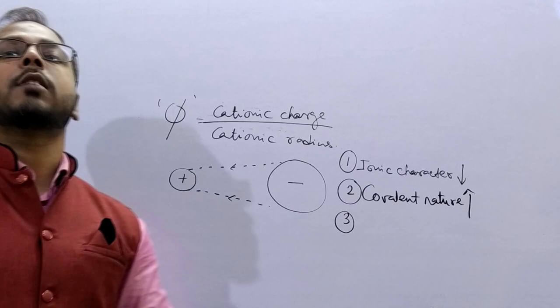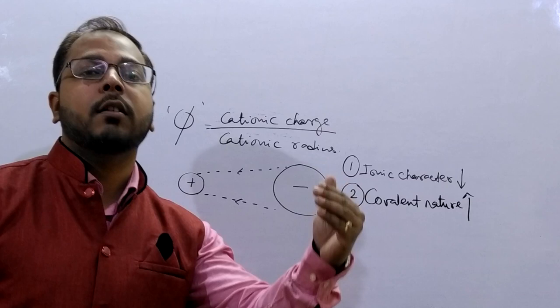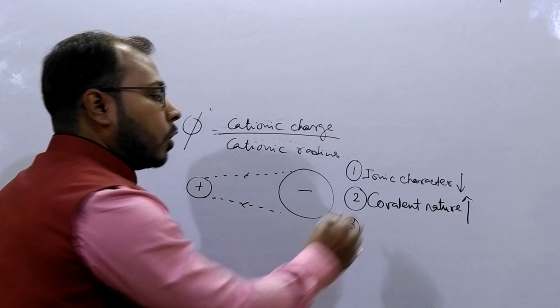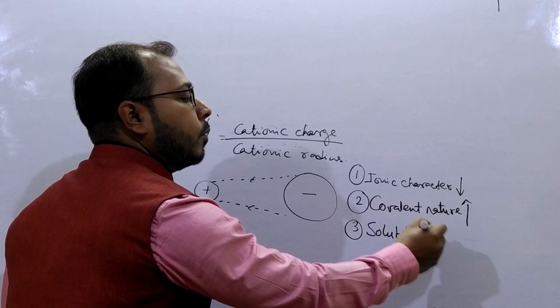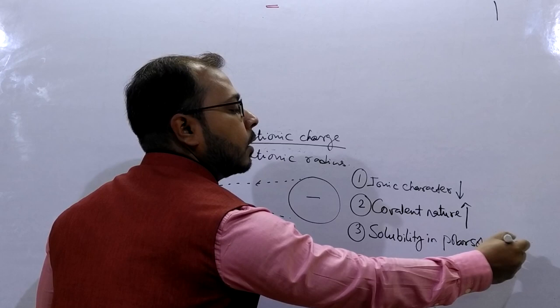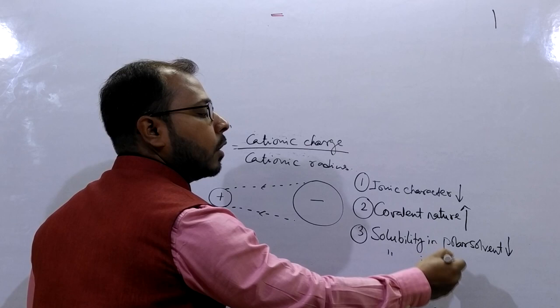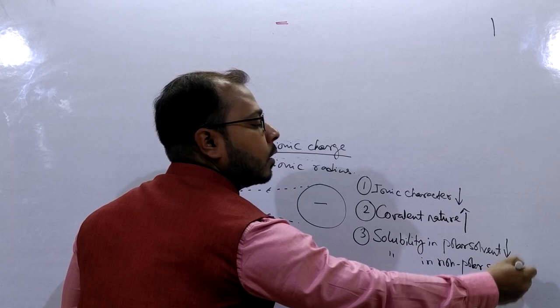We know that ionic compounds are more soluble in water. So as phi increases, covalent nature increases thereby water solubility also decreases. So solubility in polar solvent decreases. And thereby solubility in non-polar solvent increases.